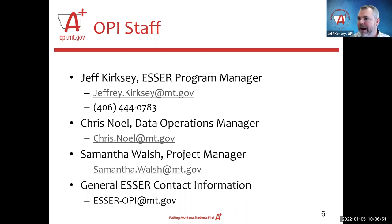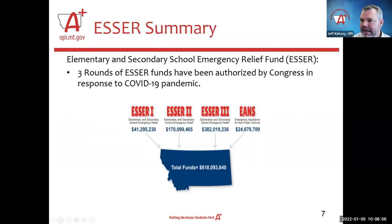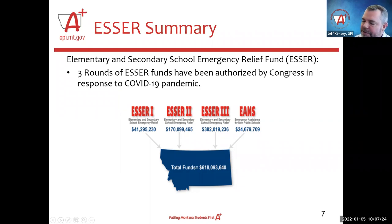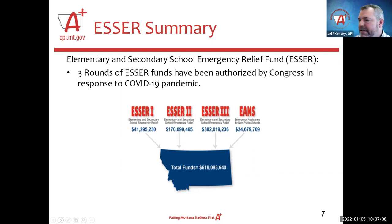You'll be hearing from them more as we go along today. ESSER stands for Elementary and Secondary School Emergency Relief. It came to us in three rounds of funding. ESSER 1, also known as the CARES Act, came to Montana at just over $41 million. ESSER 2 came to us at just over $170 million. ESSER 3, also known as ARPA — the American Rescue Plan Act — came to Montana at just over $382 million. You all have been busy budgeting and expending those funds, but it always good to remember it comes in those three distinct pots.